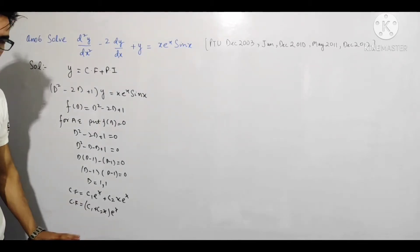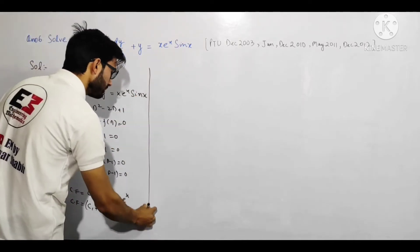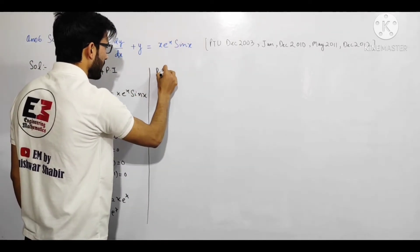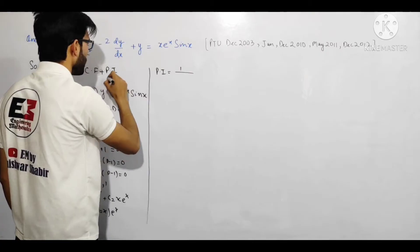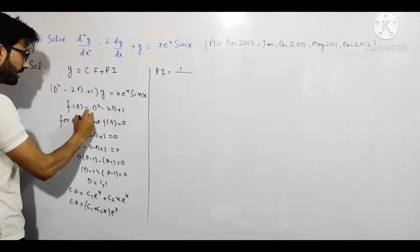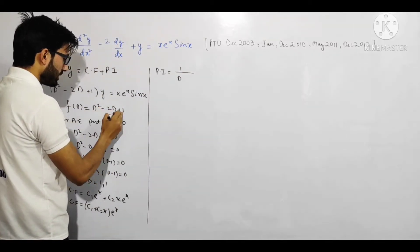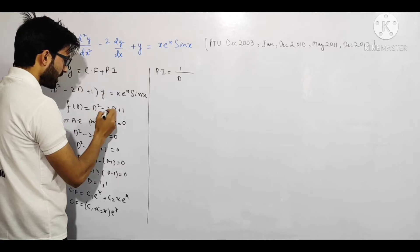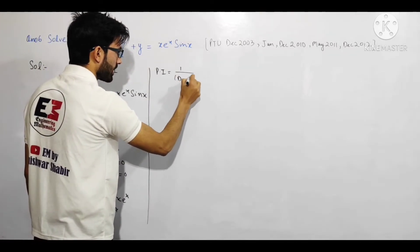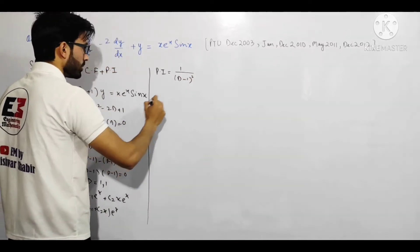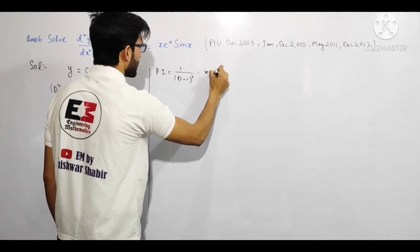Ab hum particular integral PI find karenge. PI ki formula hoti hai: PI = 1/f(D) × RHS. f(D) hamara D² - 2D + 1 hai, jise hum (D - 1)² likh sakte hain — yeh a² - 2ab + b² = (a-b)² form mein hai. RHS hamara xe^x sin x hai. Toh PI = 1/(D-1)² × xe^x sin x.